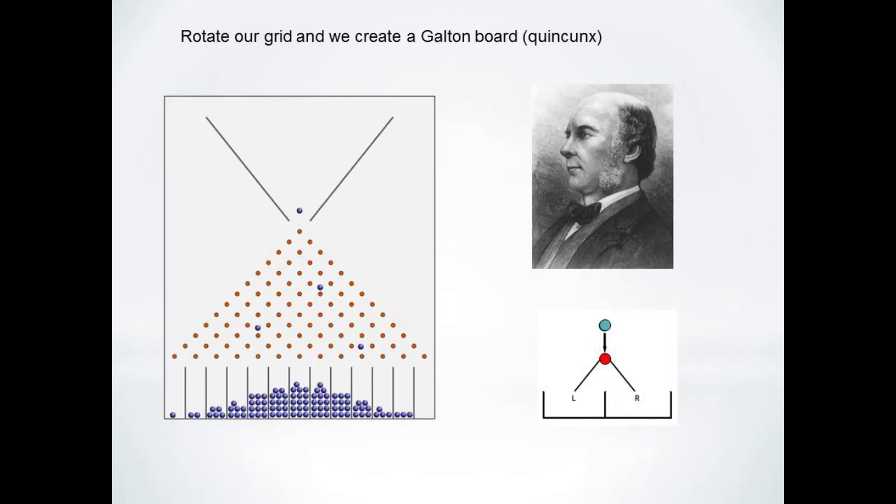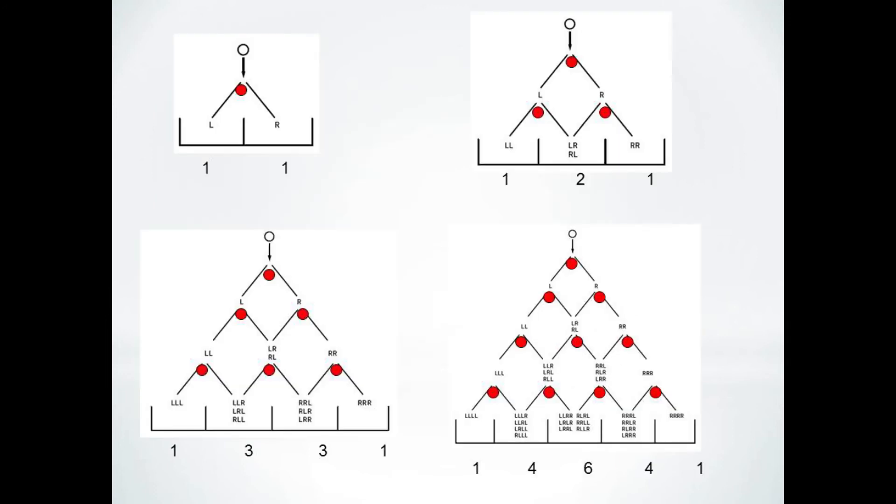If we rotate this grid 45 degrees and turn each corner vertex into a pin and think about dropping marbles on it, we get what's known as a galton board. You can see if each marble bounces with an equally likely chance of going right or left, then we are again getting stacks of marbles that grow according to Pascal's triangle.